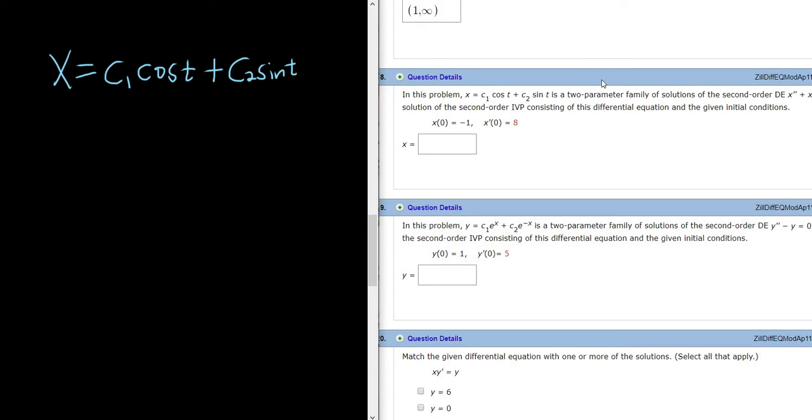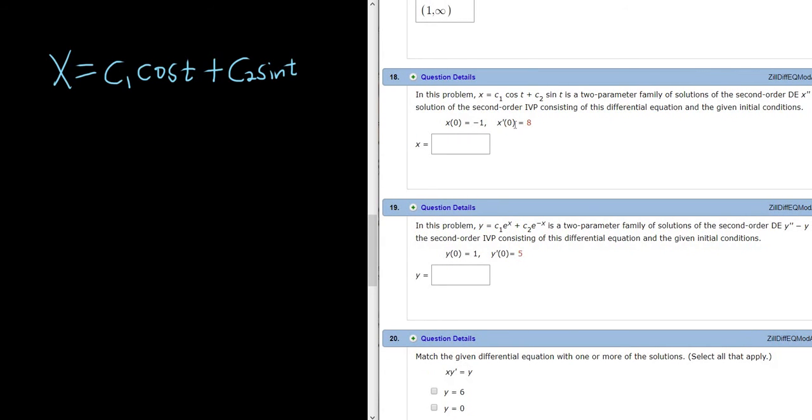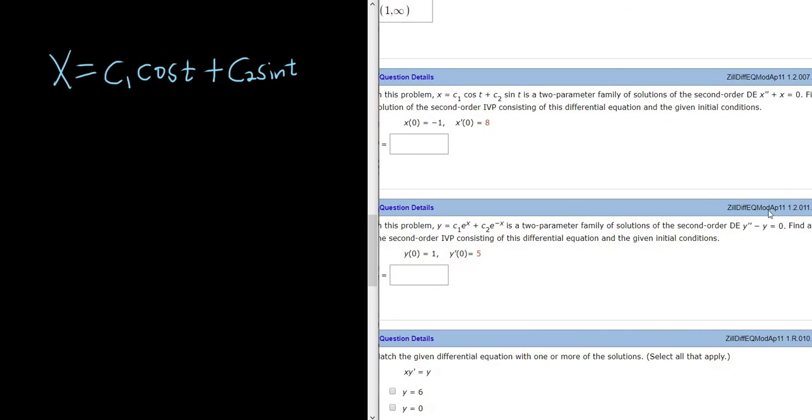And they tell us that this is a two-parameter family of solutions to this differential equation here. This differential equation models a spring. A spring will go up and down as time passes if you pull on it, and this DE models that. And so this is the solution to the DE, this x here. And they want us to find a solution to the initial value problem.